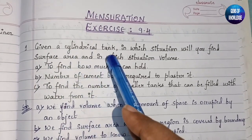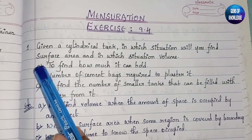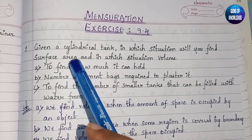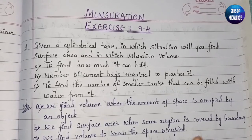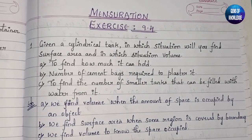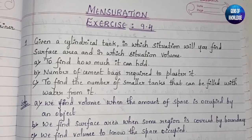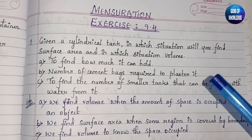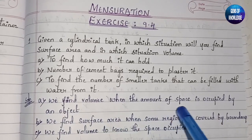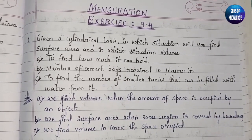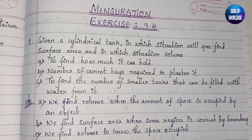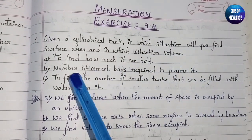The first question gives a cylindrical tank and asks: in which situation will you find surface area, and in which situation will you find volume? The first case asks how much the tank can hold — 'holding' means capacity, or total space. When asked how much content a cylinder can hold, we find the volume, since volume represents the space occupied by an object.